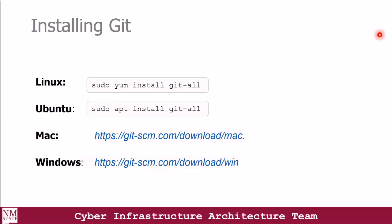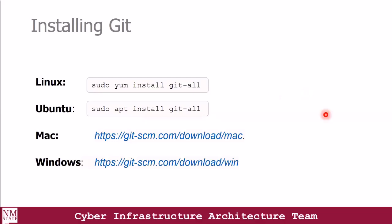So how do we get Git installed? Depending on the platform you're currently using — this command is for CentOS Linux users. If you're running on Ubuntu, you could use this command to install Git. And if you have a Mac or Windows, you could just click on either of these links to download Git.